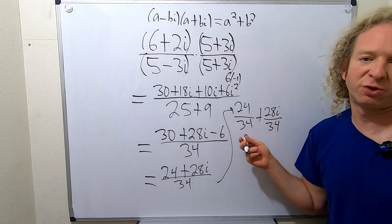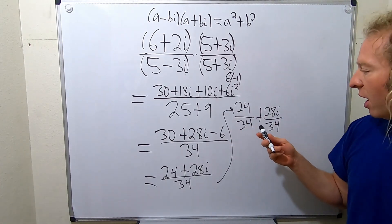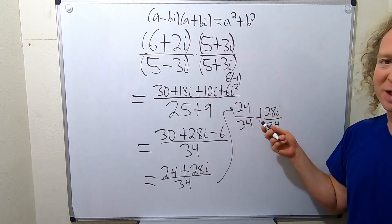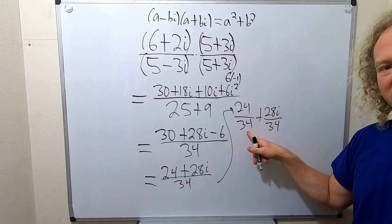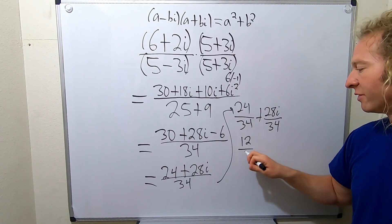So now we're supposed to simplify. You don't have to be a master at this. You can just keep dividing by two. So if you divide this by two, you get 12. Divide this by two, you get 17. So you get 12 over 17.